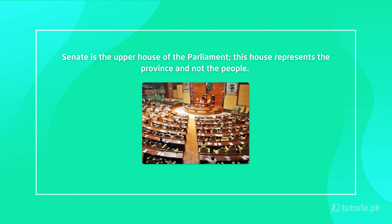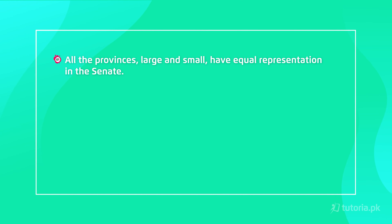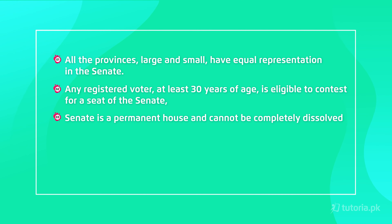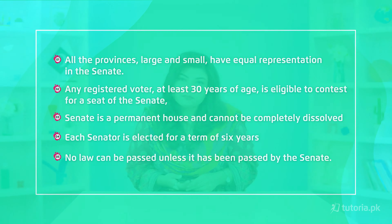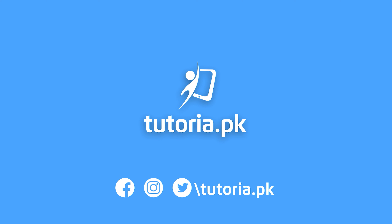The Senate is the upper house of Parliament. This house represents the provinces, not the people — the National Assembly is the representative of the people, while the Senate is the representative of the provinces. All provinces, large and small, have equal representation in the Senate. Any registered voter who is at least 30 years of age is eligible to contest for a seat in the Senate. The Senate is essentially a permanent house and is never completely dissolved. Senators are elected for six years, and it holds great importance in the affairs of the state.